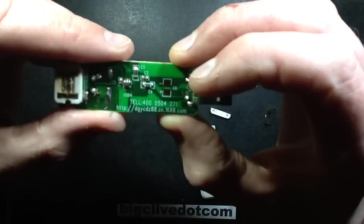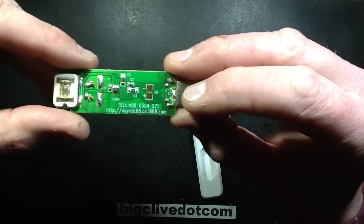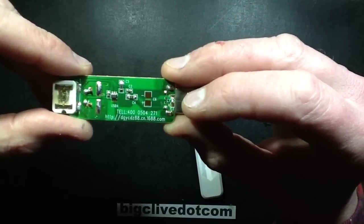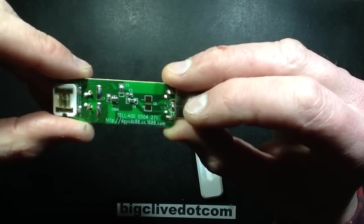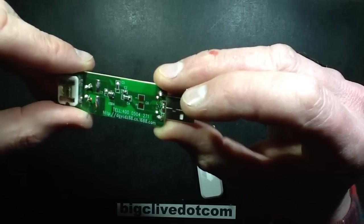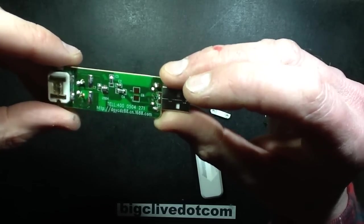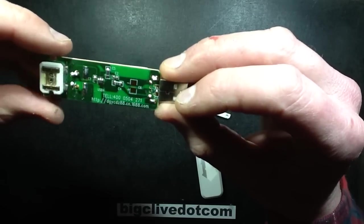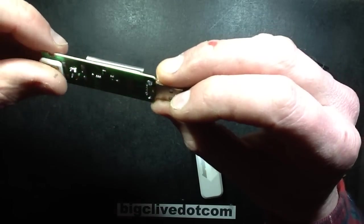And this is marked USB 4. Interestingly it's got a telephone number on the bottom of it and http DGYCDZ88.cn.1688.com. 1688.com, is that not an e-commerce portal?